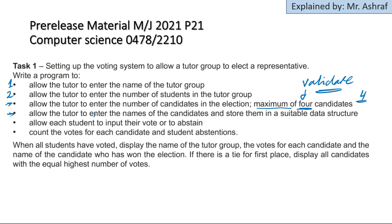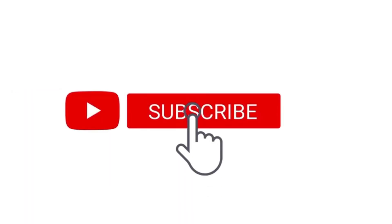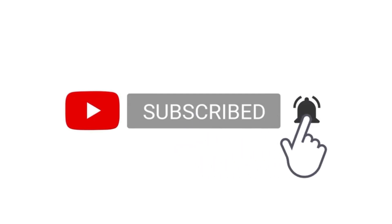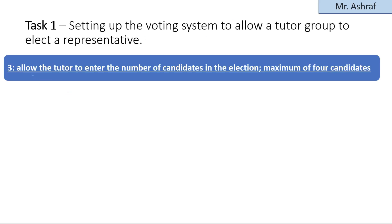Also in this session we will allow the tutor to enter the names of the candidates and store them in a suitable data structure. At the beginning the tutor will input whether they have one, two, three, or a maximum of four candidates. The next point requires inputting the names depending on how many candidates there are — if two candidates are selected, the program asks for two names; if three, it asks for three names, and so on.